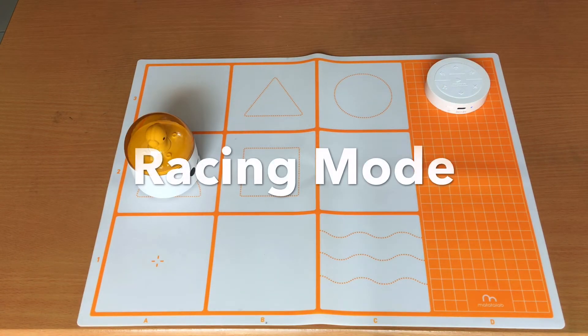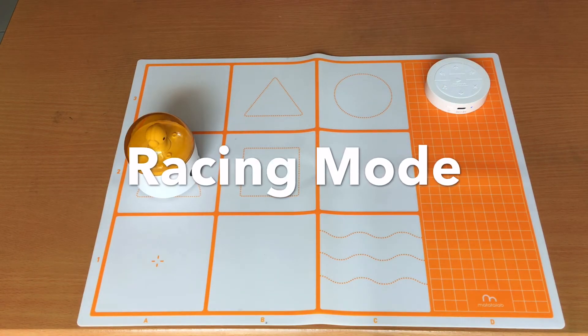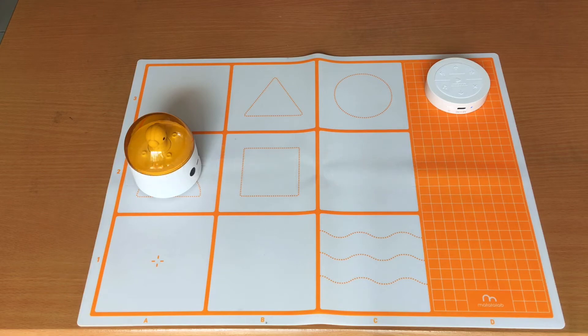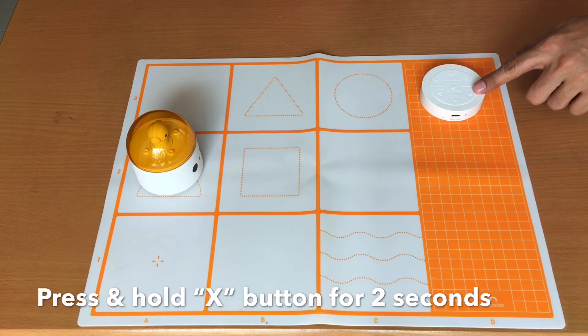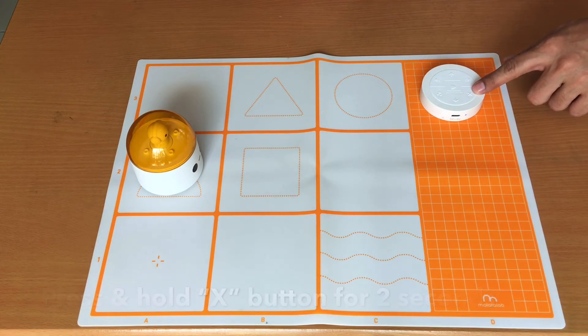Aside from the gyroscope, the kids will also have a lot of fun playing the racing game. To enter the racing mode, press and hold the clear button for 2 seconds and start shaking the controller.